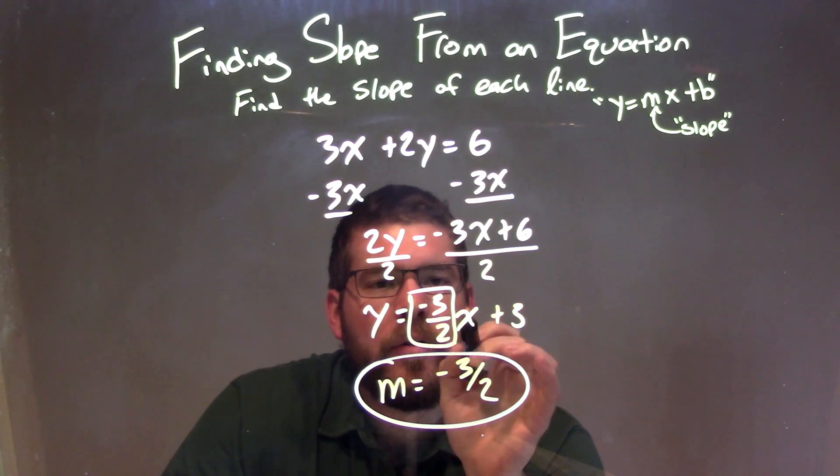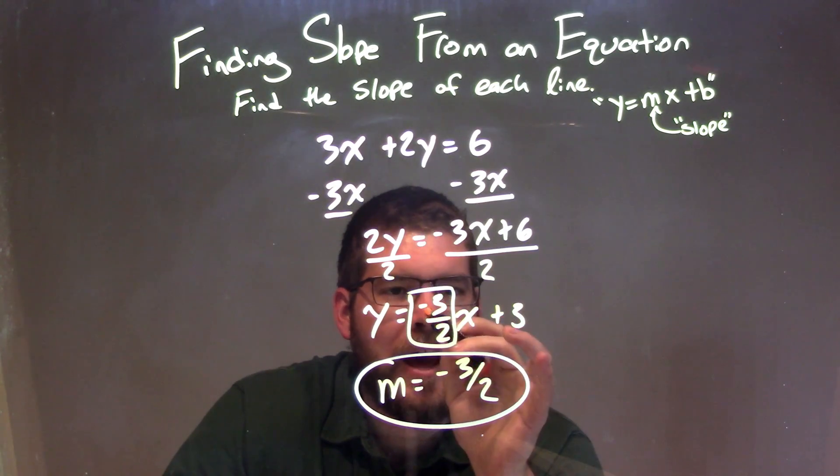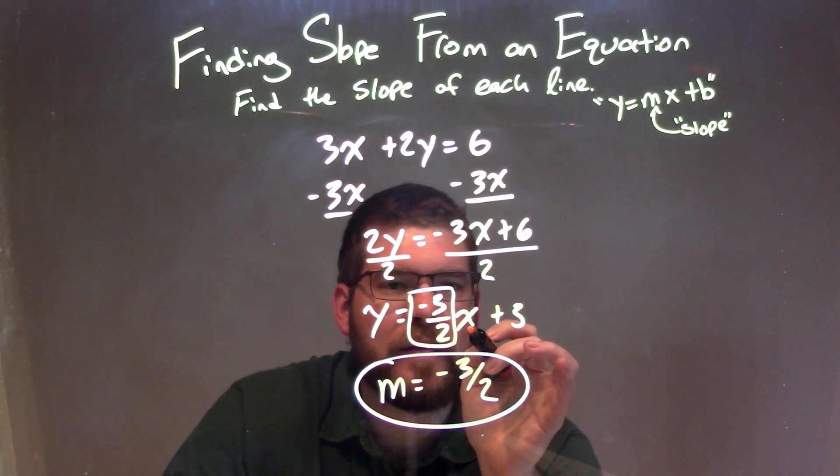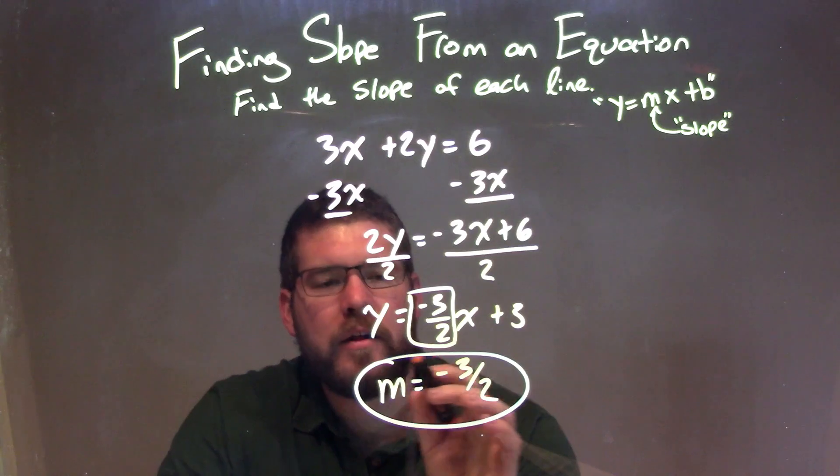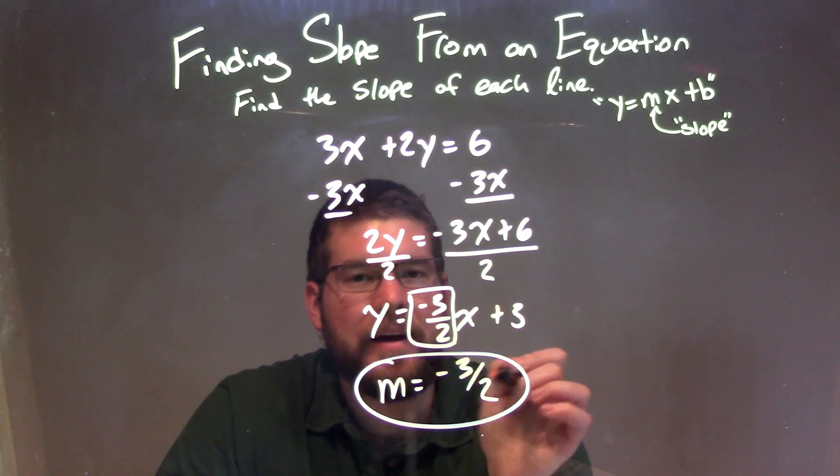From there, I have my slope-intercept form, y equals mx plus b. We identify m, the coefficient in front of x, as negative three-halves. And so my final answer for the slope is m equals negative three-halves.